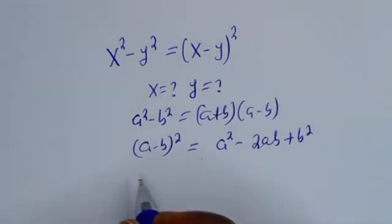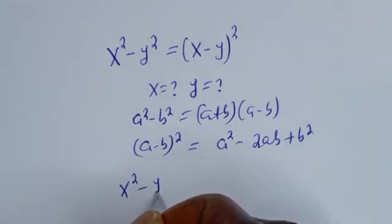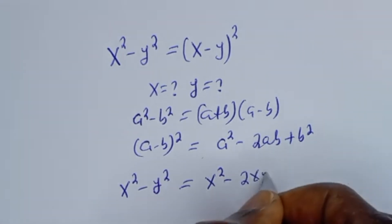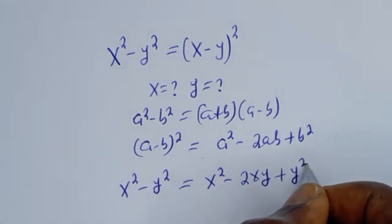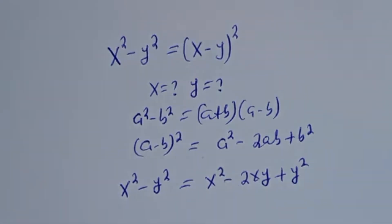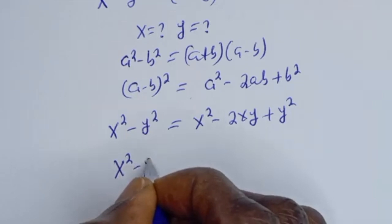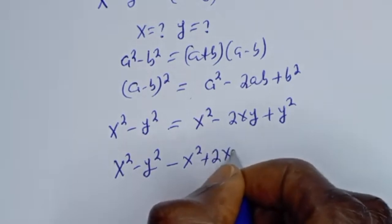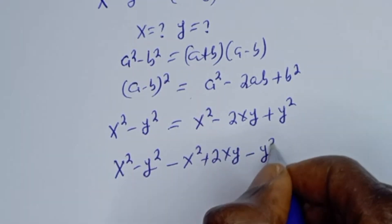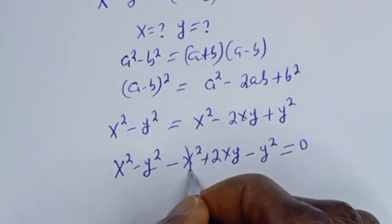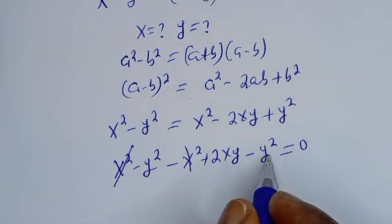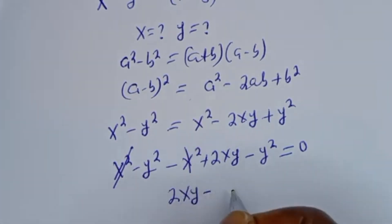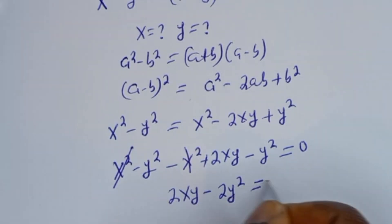Now let's substitute. We have X squared minus Y squared is equal to X squared minus 2XY plus Y squared. From here, X squared minus Y squared minus X squared plus 2XY minus Y squared is equal to 0. The X squared terms cancel, and minus Y squared minus Y squared gives minus 2Y squared. So we have 2XY minus 2Y squared is equal to 0.